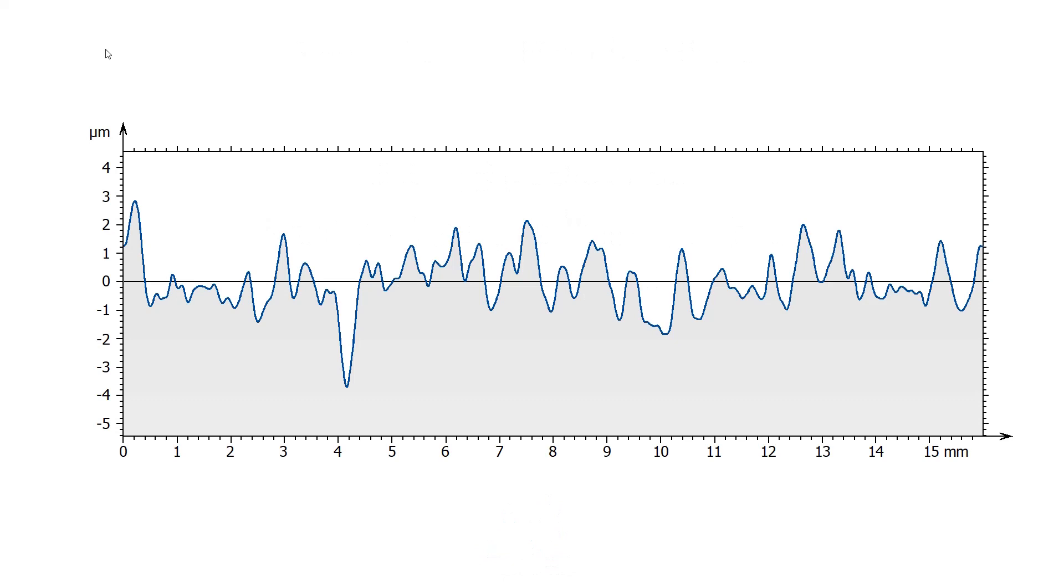A measured profile is a series of height values in function of the lateral position. Heights are referenced, by convention, from the mean line, which is calculated as the mean value of all heights. This mean value is set as zero. Heights are positive above the mean line and negative below.